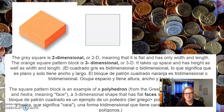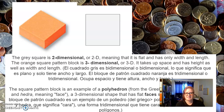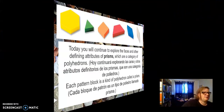Everybody say polyhedron. From the Greek poly, meaning many — just like polygon — and hedra, meaning face. A three-dimensional shape has flat faces shaped like polygons. And we're going to go over that very shortly.